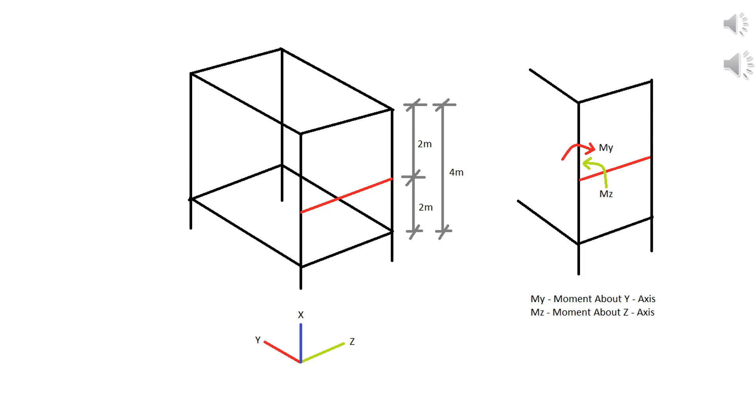Due to this breaking, software will consider only this 2 meter as a length of column in both y-axis and z-axis. But practically, the total length of column about y-axis is 2 meter because there is a beam connected and it will act as a restraint. But the total length of column about z-axis is 4 meter because there is no intermediate beams.